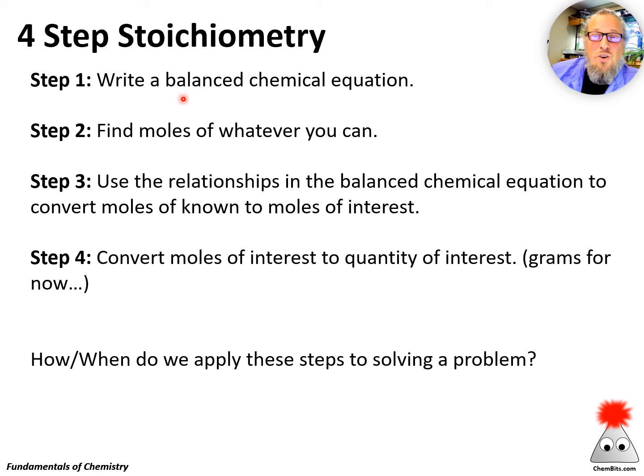So once again, here are our four steps. Get these steps locked in. We're going to use them a lot. Step one, write a balanced chemical equation. Step two, find moles of whatever you can find moles of. Step three, use the relationships in the balanced chemical equation to convert moles of known to moles of interest. And finally, step four, convert moles of interest to whatever quantity you're looking at in the problem. And again, at this point, it's most often going to be grams.